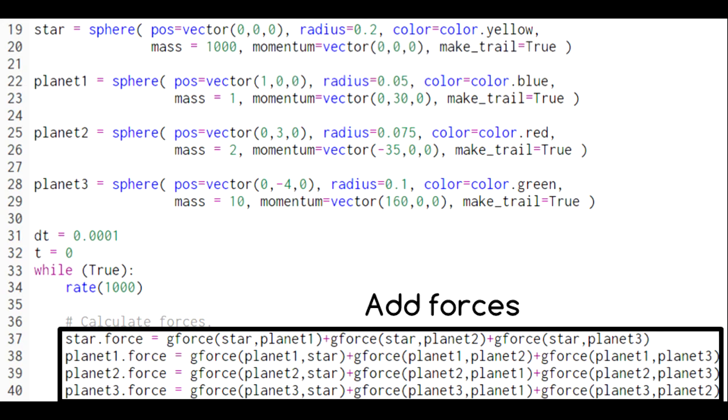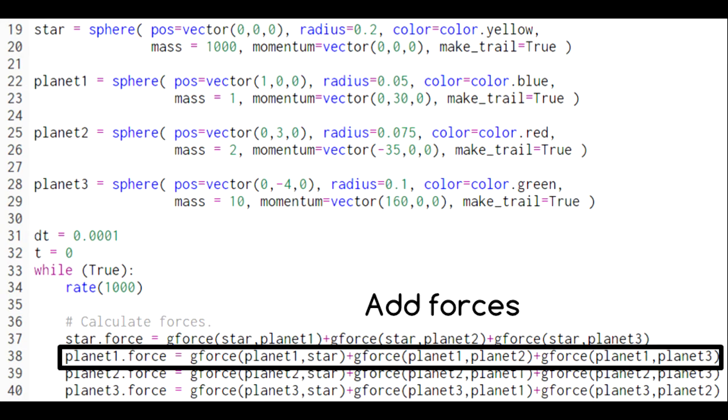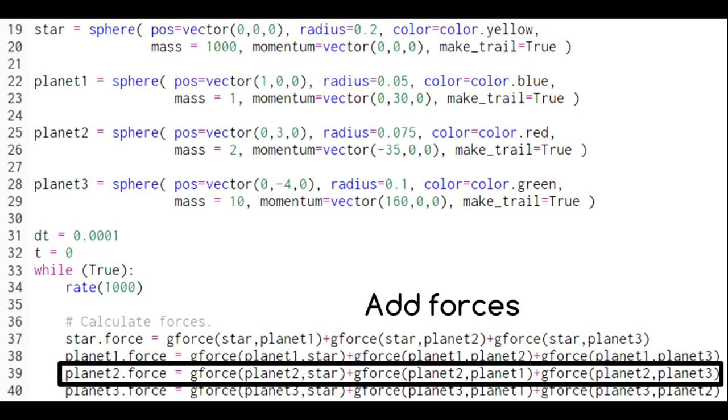But we still need to account for the forces between the planets. So, when we set up the Euler-Cromer method, we add together these forces. For planet 1, we add the forces it feels from the star, planet 2, and planet 3. For planet 2, we add the forces it feels from the star, planet 1, and planet 3.